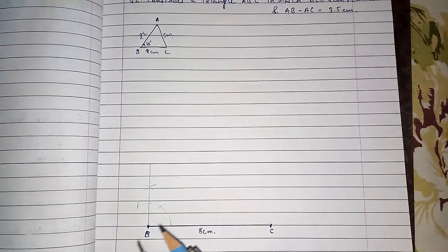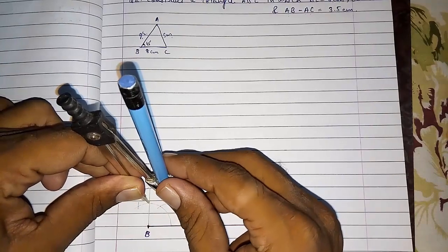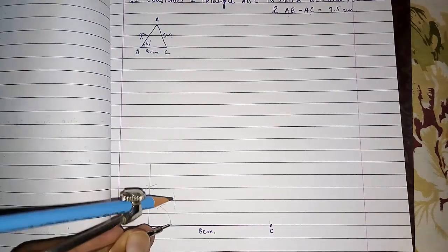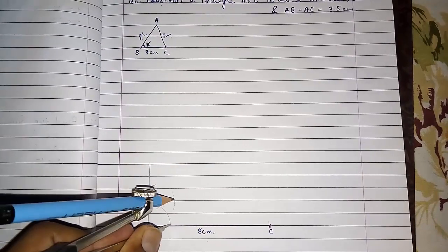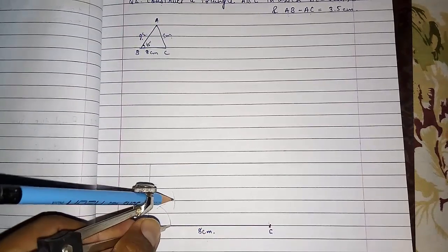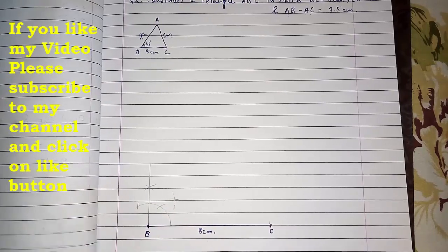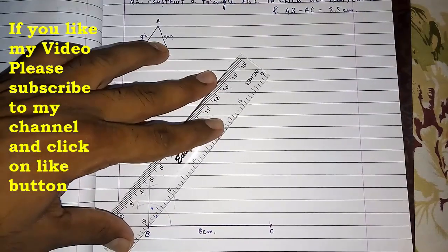We will make an arc from the 90 point, it should be more than half, and we are going to make it from zero also.